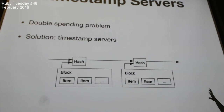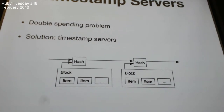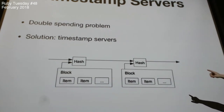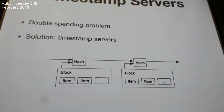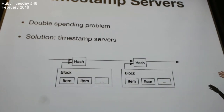That's why we introduced the concept called the timestamp server. What happens inside one of these servers is that you create a block that generates a hash, and that hash is used to generate the next block, and so on. So if you change something in a previous block then all the hashes will have changed.